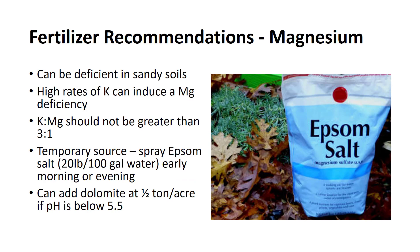Magnesium is not commonly deficient in most soils but can be deficient in sandy soils. Applying high rates of potassium can induce a magnesium deficiency. The ratio of exchangeable potassium to exchangeable magnesium should not be greater than 3 to 1 for most crops. Magnesium fertilizer should not be added if the soil magnesium exceeds 3% of the total basis or when the soil test indicates a level greater than 75 pounds per acre. A quick way to apply a temporary source of magnesium for growing plants is to spray the foliage with a solution of magnesium sulfate — Epsom salt at 20 pounds per 100 gallons of water — when plant stress is low in early morning or evening. Dolomitic limestone applied at a rate of half a ton per acre, where the soil pH is below 5.5, will supply adequate amounts of magnesium for most nursery crops.